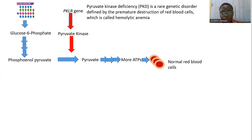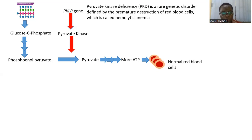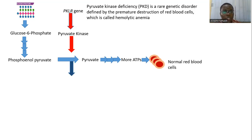The red blood cells carry oxygen and some other things. With the help of ATP, they remain normal and are able to move around. But whenever we have a variation or a mutation in the PKLR gene, this results in what we call pyruvate kinase deficiency.